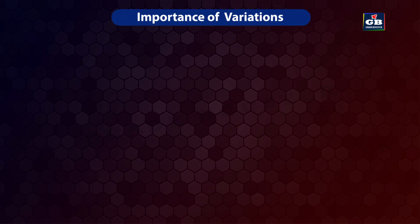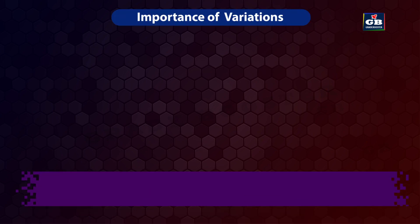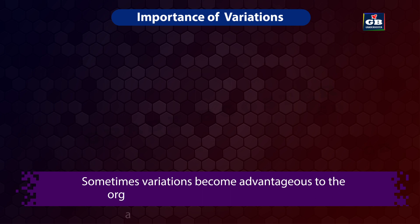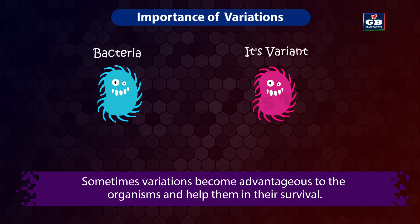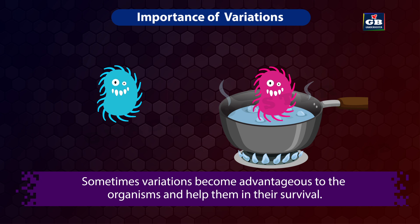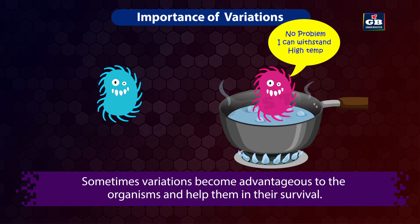Sometimes variations become advantageous to organisms and help them in their survival. For example, a variant of bacteria can withstand high temperature. This variation helps it to survive better in a heat wave.